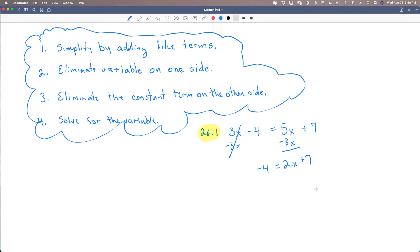So now I need to do step number three, eliminate the constant term on the other side. So we'll do that by subtracting 7 from both sides. Those will cancel. This will be negative 11 equals 2x. So now we're going to factor out the two by dividing both sides by two. These two cancel. This is a prime number, we can't divide it by two. So our answer is negative 11 over 2 equals x. That's as far as we can go with that problem.